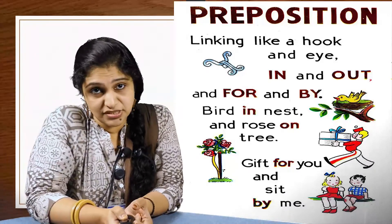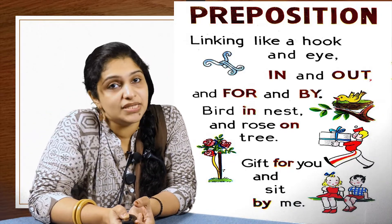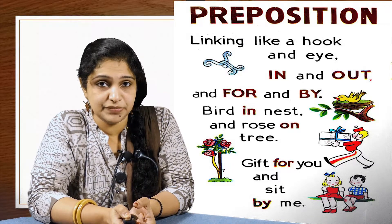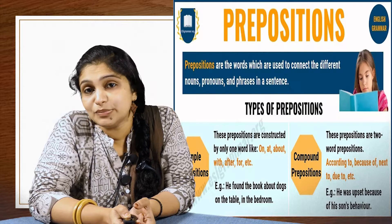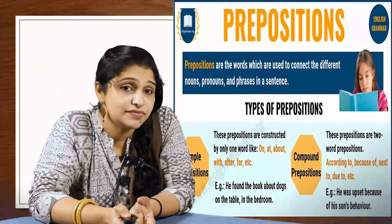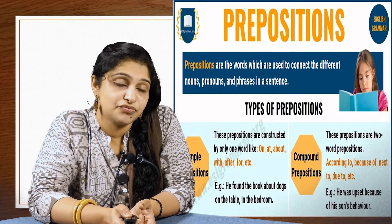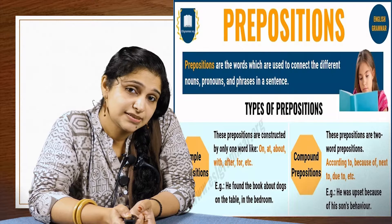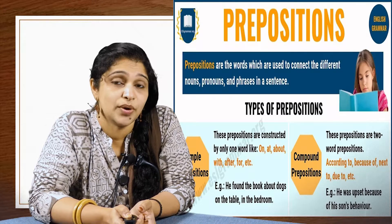There are two types of prepositions: simple prepositions and compound prepositions. A simple preposition is a one-word preposition — for example, of, for, in, to, etc. Sometimes a preposition can also come in a two-word or three-word combination, which is called a compound preposition. A compound preposition functions as a single preposition and consists of two elements such as 'according to', 'because of', 'different from', 'due to', and 'instead of'.